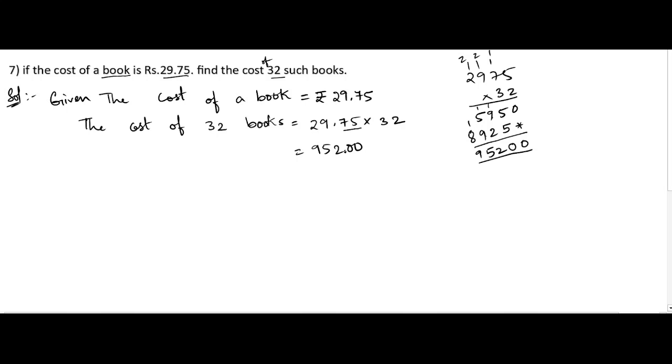After decimal, if we are having zeros, we can just ignore them. So rupees 952 is the price. Hence, in the final statement we can write that the cost of